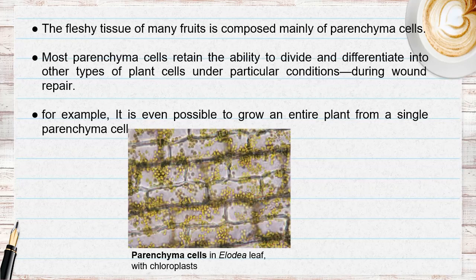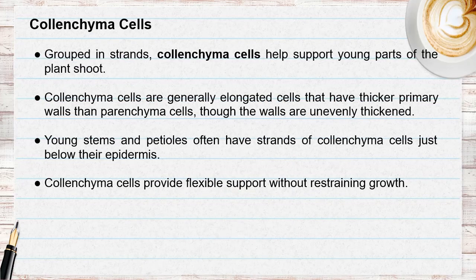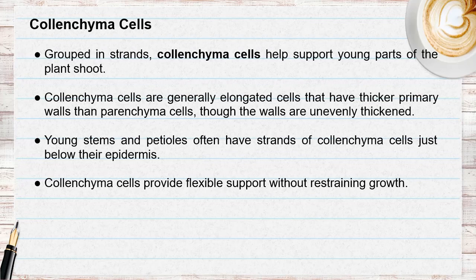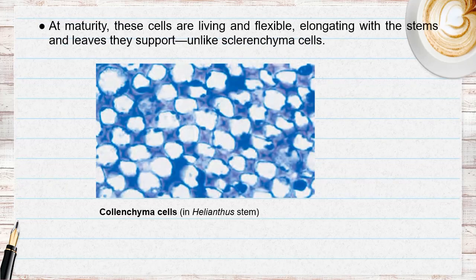The next type are collenchyma cells. Collenchyma cells help support young parts of the plant shoot. They are generally elongated and have thicker primary walls than parenchyma cells, allowing them to provide flexible support without restraining growth. Mature collenchyma cells are living and flexible. The diagram shows an example of collenchyma cells.